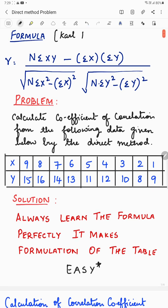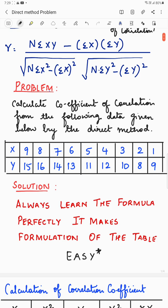So, Carl Pearson's coefficient of correlation. As you can see on the screen, the formula is n into summation xy minus summation x summation y divided by n under root. Don't forget under root. This is something that you really forget while doing the problem.